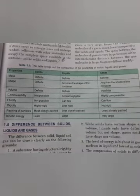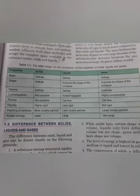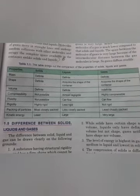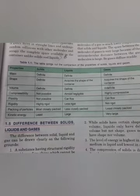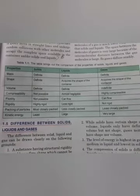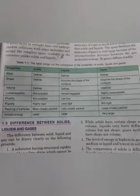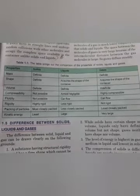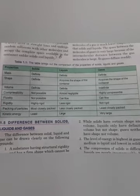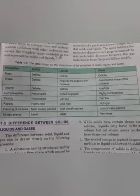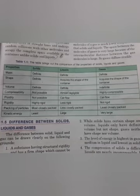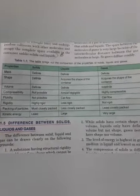In terms of volume, solids have a definite volume. Liquids also have a definite volume. Gases do not have a definite volume because molecules in gases are very far apart and they undergo rapid motion. In solids, molecules are very closely packed so they cannot be compressed. In liquids, molecules are a bit far apart so we can compress liquid to a very limited degree. In gases, molecules are far apart and once you apply pressure the molecules come close to each other, therefore compression in gases is possible to a higher degree.